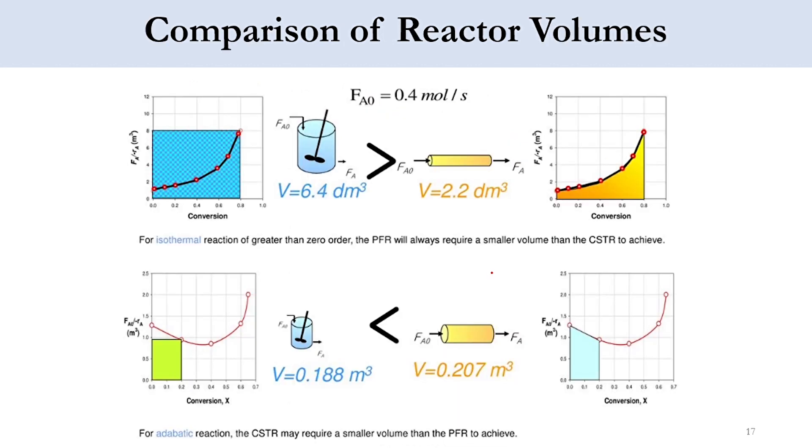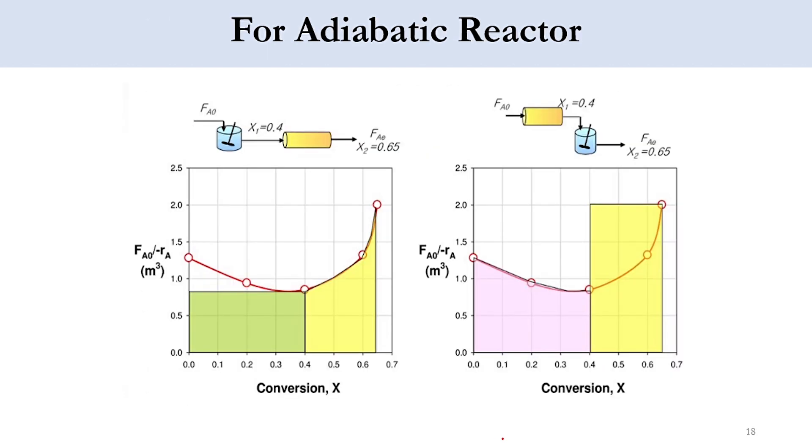Now we will compare the reactor volumes. There are two combinations. You can see the first one shows the isothermal system where we have installed CSTR here and PFR over here. We have solved an example showing the volume was 6.4 cubic decimeter while that of PFR was 2.2 cubic decimeter. Obviously for the isothermal system, volume of CSTR will be greater than the volume of PFR for the same conversion and flow rate. But if you look here for the adiabatic system, in this region the volume is 0.188 cubic meter while for the PFR the answer would have been 0.207 cubic meter. This means that for adiabatic system, the CSTR may require a smaller volume than the PFR to achieve the required conversion.